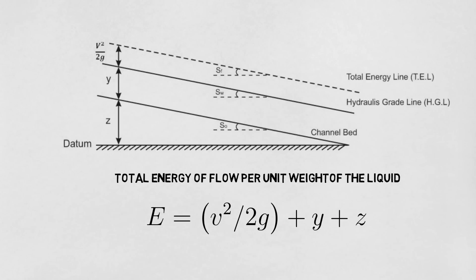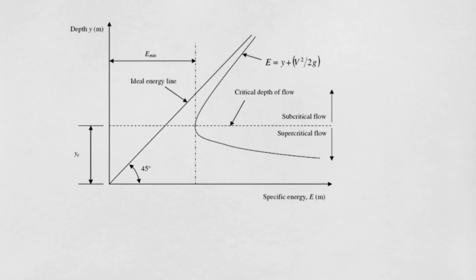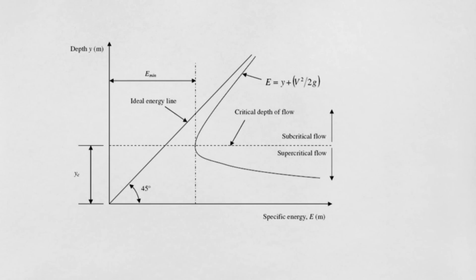The specific energy is actually made up of three components which are the velocity head, the depth of flow, and the datum head respectively. When we plot a graph between the depth of flow and the specific energy, this is what we get.